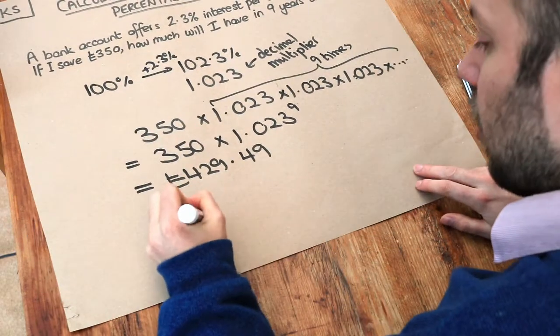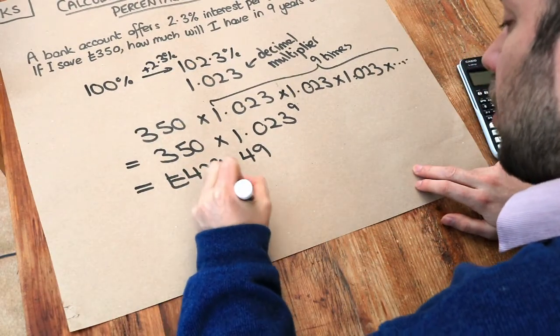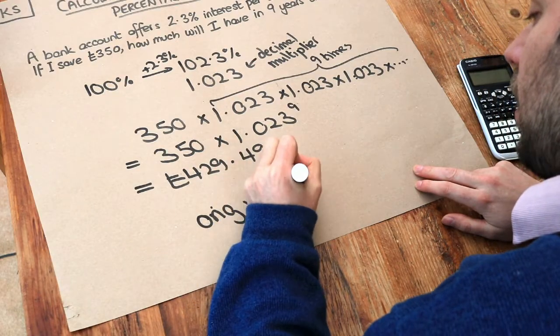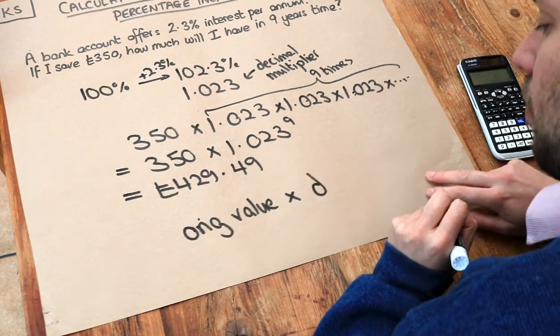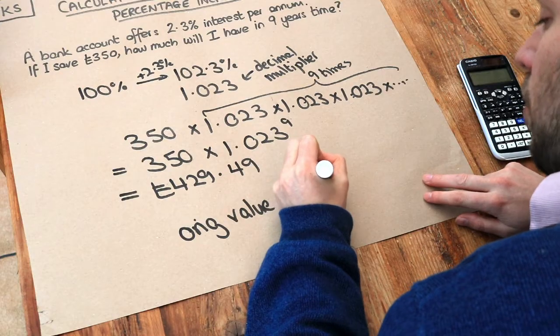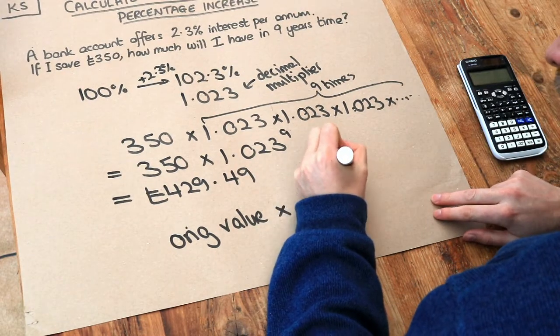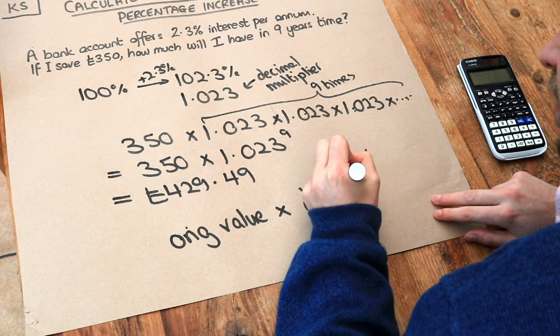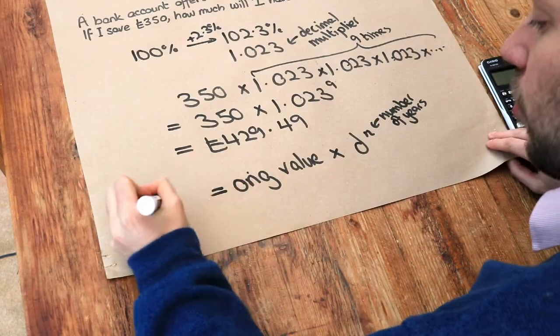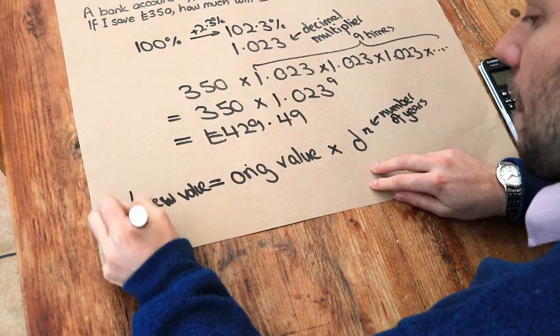So just to give you a formula, if you like, we take the original value and we times it by your decimal multiplier to the power of the number of years or the number of months or whatever the time unit is. And that will give you your new value. Thank you.